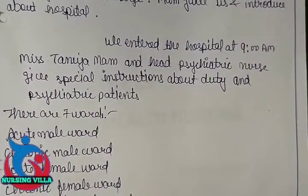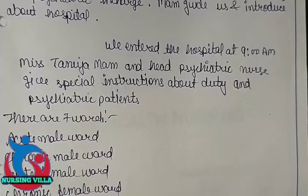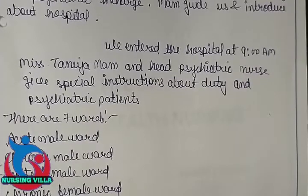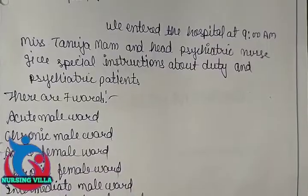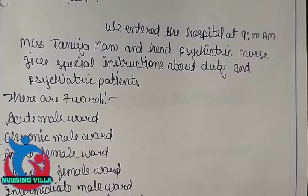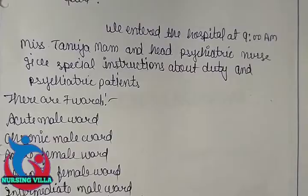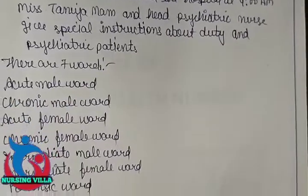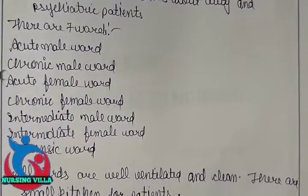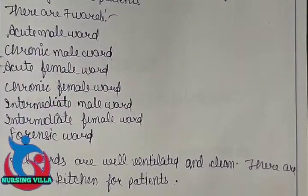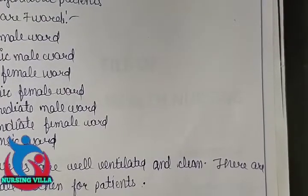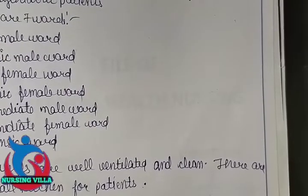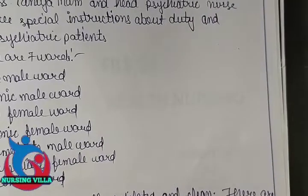There are seven wards: acute male ward, chronic male ward, acute female ward, chronic female ward, intermediate male ward, intermediate female ward, and forensic ward. All wards are well ventilated and clean. There are small kitchens for patients as well.